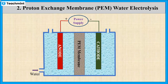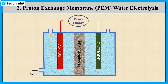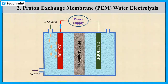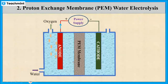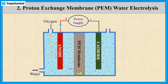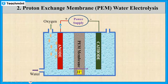at anode, liberation of oxygen takes place along with the formation of protons and electrons. The protons diffuse towards the cathode through the PEM membrane. And the electrons move in the external circuit and reach the cathode chamber.